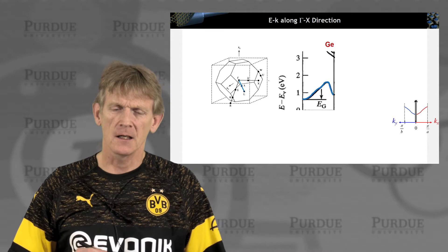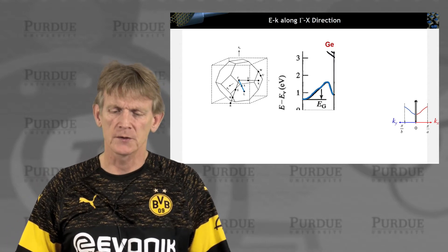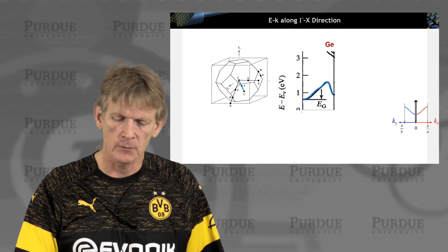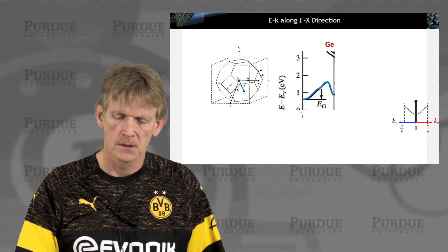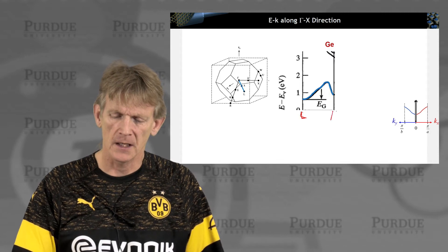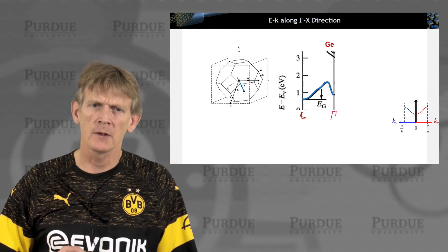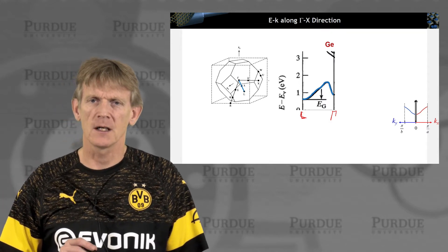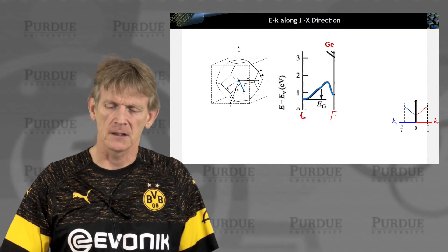So here is the E-k line indicated in blue for germanium. And what's interesting here is that the minimum point is at L versus at gamma, which is the normal origin. So the minimum point of energy in the conduction band for germanium is not at gamma, but it is at L.